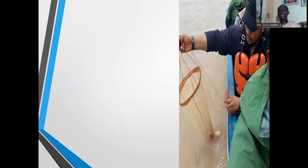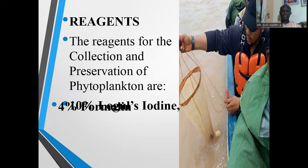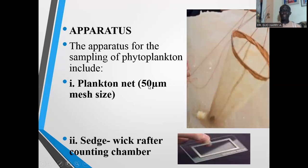For the collection, preservation, and identification of phytoplankton, the following reagents and apparatus are needed. Reagents include 10% Lugol's iodine for preservation, and also 4% formalin for preservation, as well as distilled water. The apparatus includes a plankton net of usually 50 micrometres mesh size, and a Sedgwick-Rafter counting chamber.